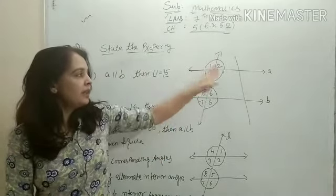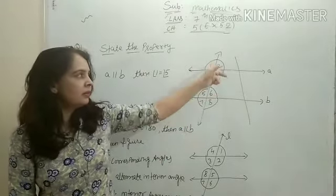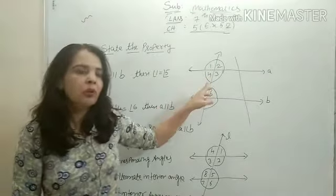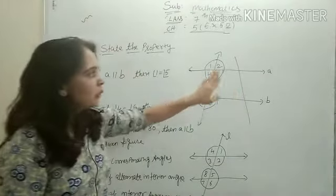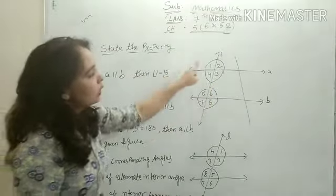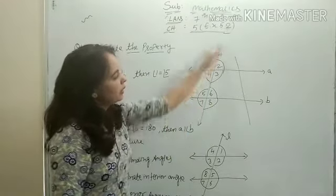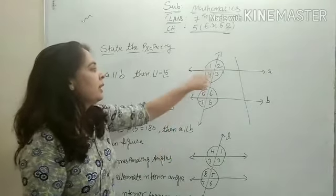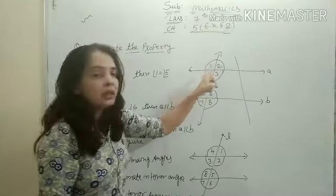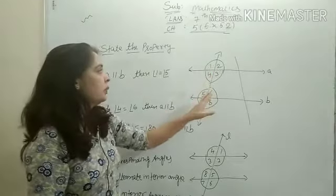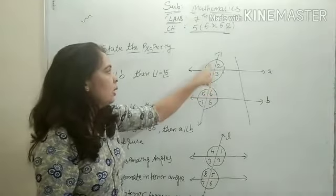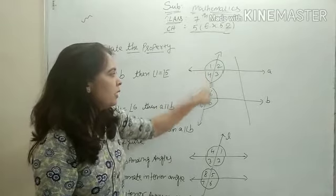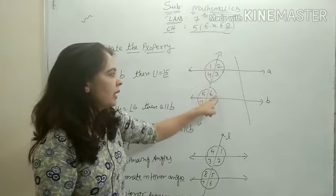What is the property given by the parallel line and the transversal line? We know about the properties. If there are two parallel lines cut by the transversal line, the important points are corresponding angles and alternate angles. If angles are on the same face, we call them corresponding angles. Opposite face angles we call alternate angles.